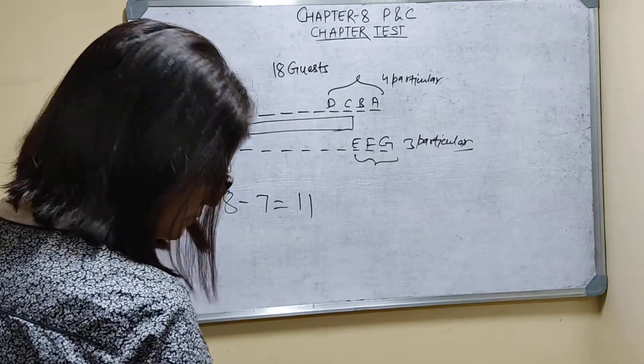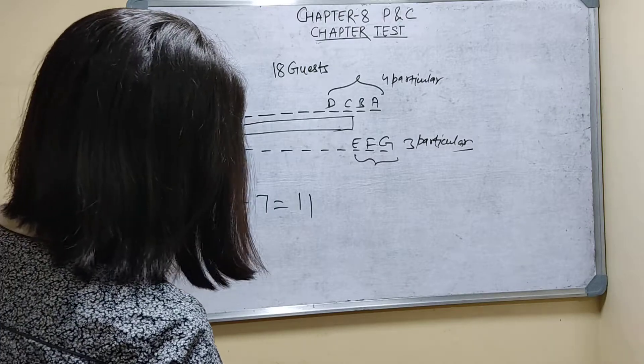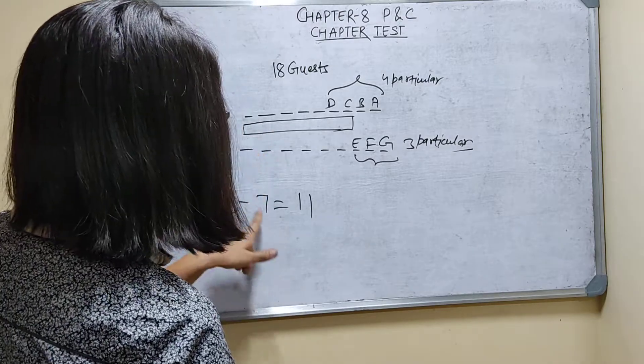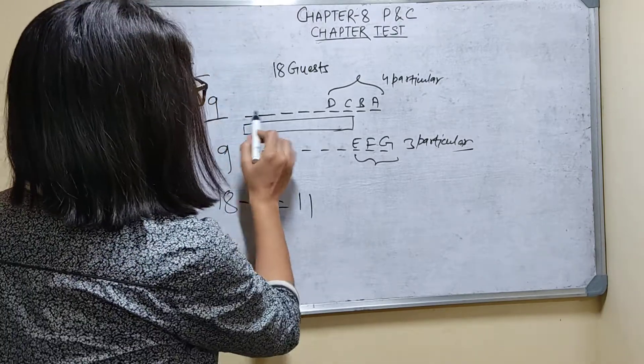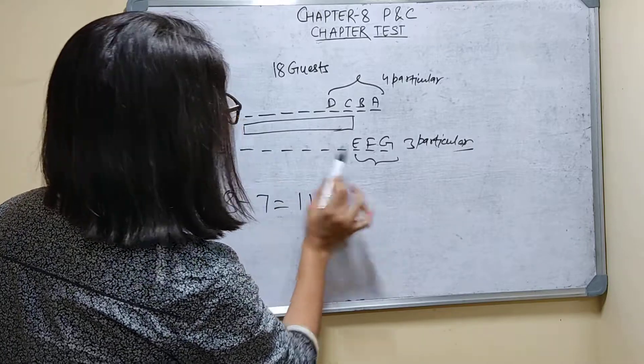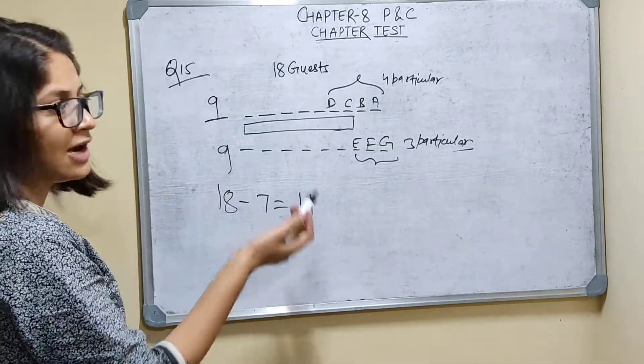11 will sit in these 5 places and in these 6 places. Total 11 places are there.